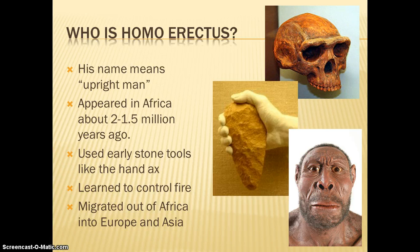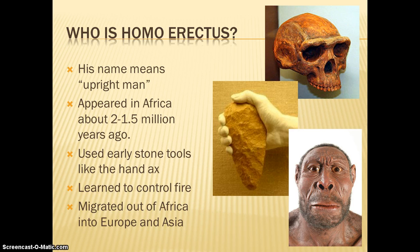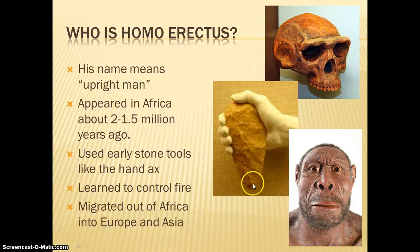Homo erectus. His name means upright man. He was pretty special because he was the first hominid who stood almost completely upright — pretty much almost like we do now. He was also special because he learned to control fire. Fire was created naturally, like when lightning struck a tree and created a small spark or flame; he learned to harness that flame and use it to cook his meat, and also to protect himself from larger animals. He also used stone tools, but his tools were a little more refined. The stone axe that Homo erectus would have used actually looks like it has been created to come to a point, and the edges are a little more sharp. So his tools are more refined.